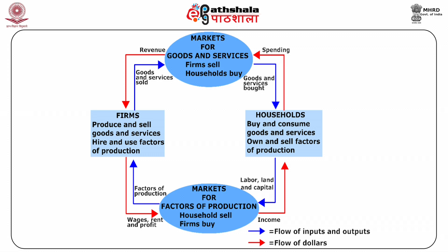This diagram gives a simple model of the economy. There are two decision makers in the model: households and firms. There are two markets: the market for goods and services, and the market for factors of production. Firms are the sellers in the market for goods and services and the buyers in the market for factors of production. Households are buyers in the market for goods and services and sellers in the market for factors of production. The inner loop represents the flows of inputs and outputs between households and firms, while the outer loop represents the flows of dollars between them.